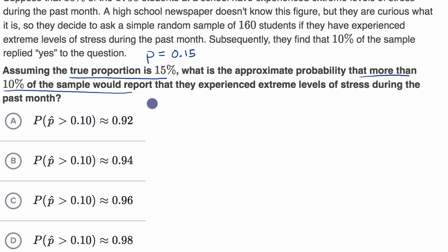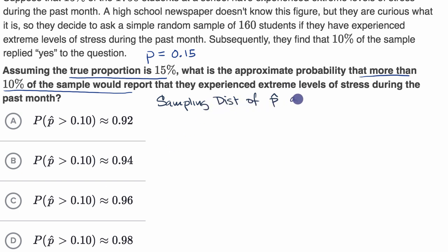The way we're going to tackle this is to think about the sampling distribution of our sample proportions. First, we'll ask: is this sampling distribution approximately normal? If it is, then we can use its mean and standard deviation to create a normal distribution with that same mean and standard deviation in order to approximate the probability they're asking for.